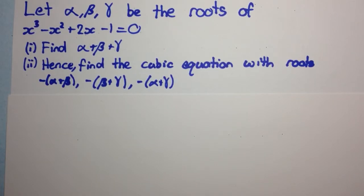The question says, let alpha, beta and gamma be the roots of the equation x cubed minus x squared plus 2x minus 1 equal to 0.